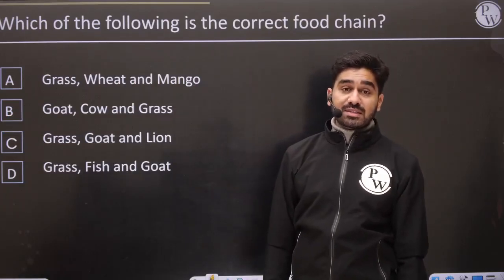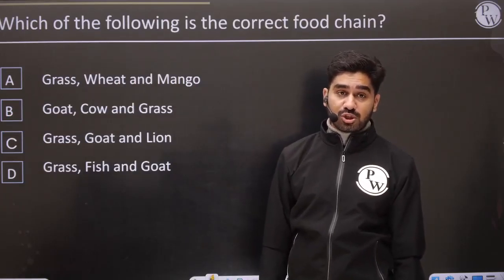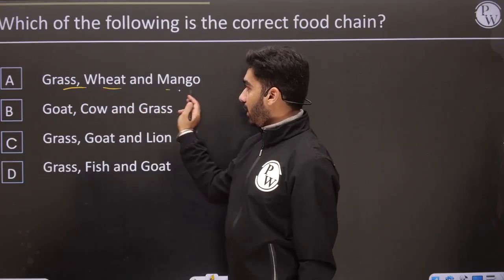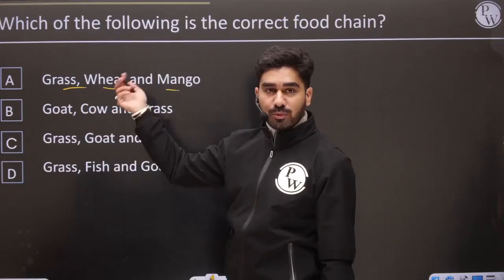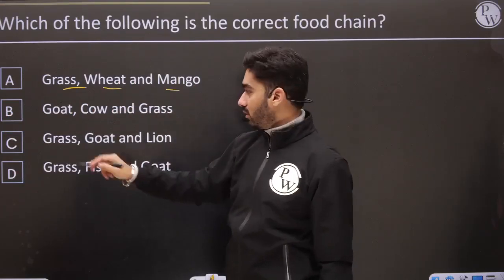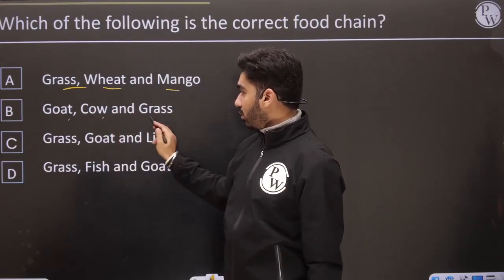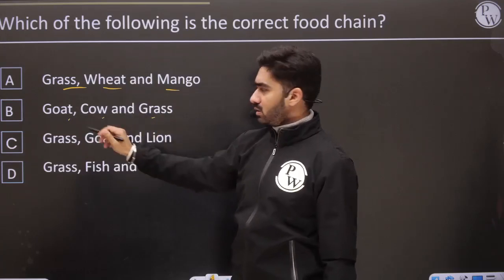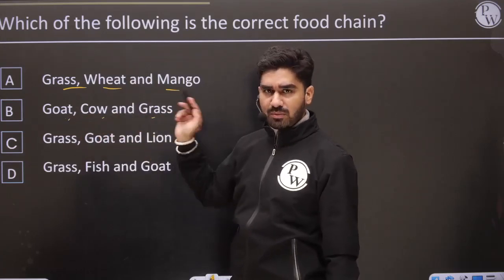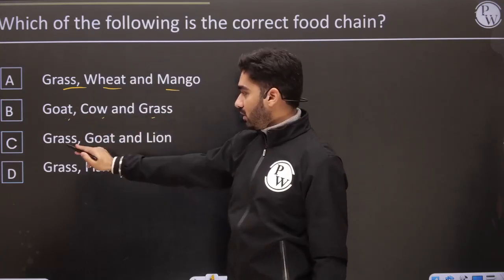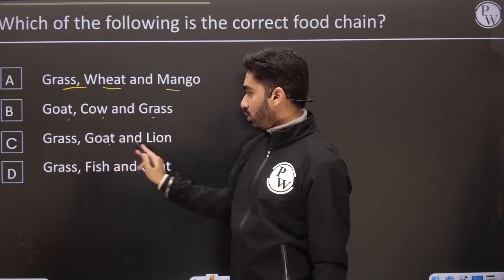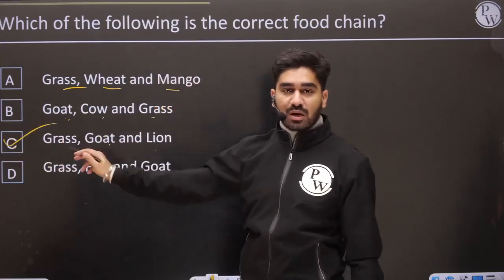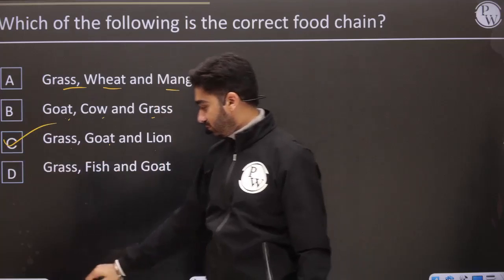Which of the following is the correct food chain? Grass, beet, mango — these are all three producers, so that's wrong. Goat, cow, grass — that order is reversed. Grass, goat, lion — that looks correct. Grass to fish then goat is not possible. So the correct food chain is: grass → goat → lion.